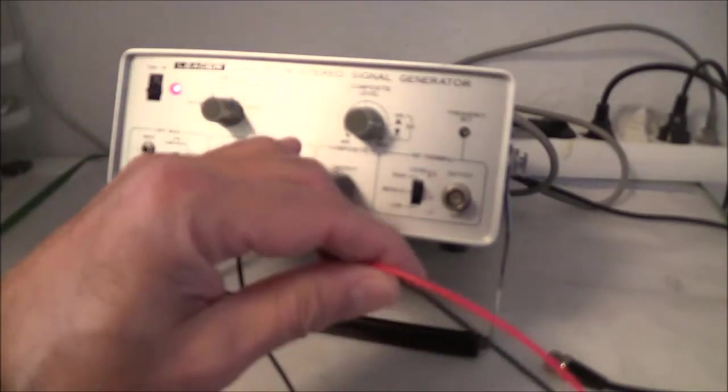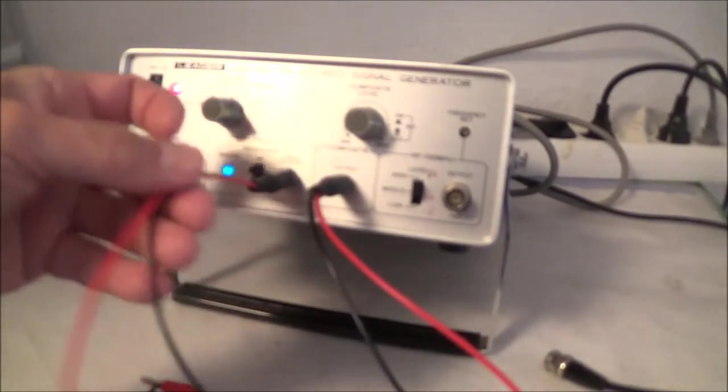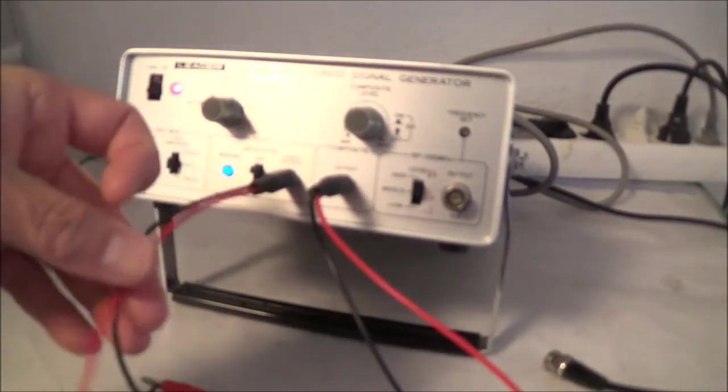The first thing we are going to do is the phasing adjustment. I have the manual in front of me. It says here we want the 38 kHz subcarrier and the pilot signal to be properly phased. So what we do is we connect the composite output to the vertical input of the scope and the 19 kHz output connects to the horizontal input of the scope.